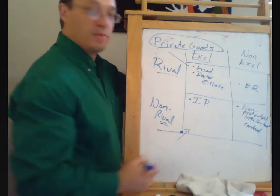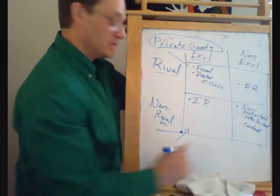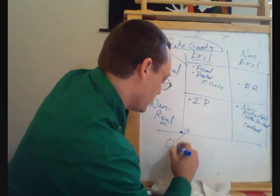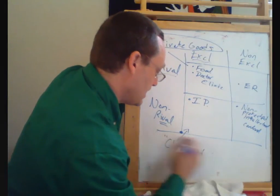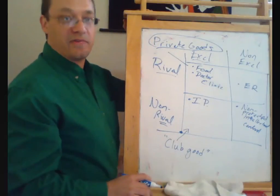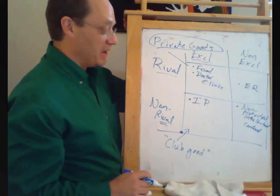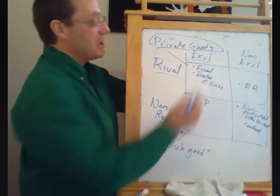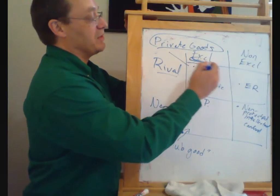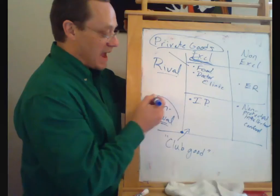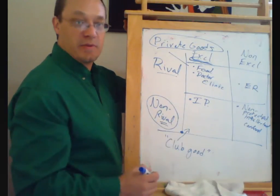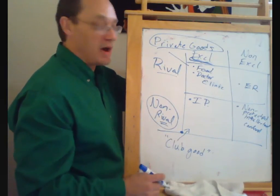Down here this goes by a couple of different names. A common one is what's called a club good. So the idea here is you think about some fancy club or country club, and they've got a swimming pool. Well, the fact that they have gates on the place mean that it's excludable, but maybe adding one more person to the swimming pool doesn't make anyone worse off, so it's non-rival.